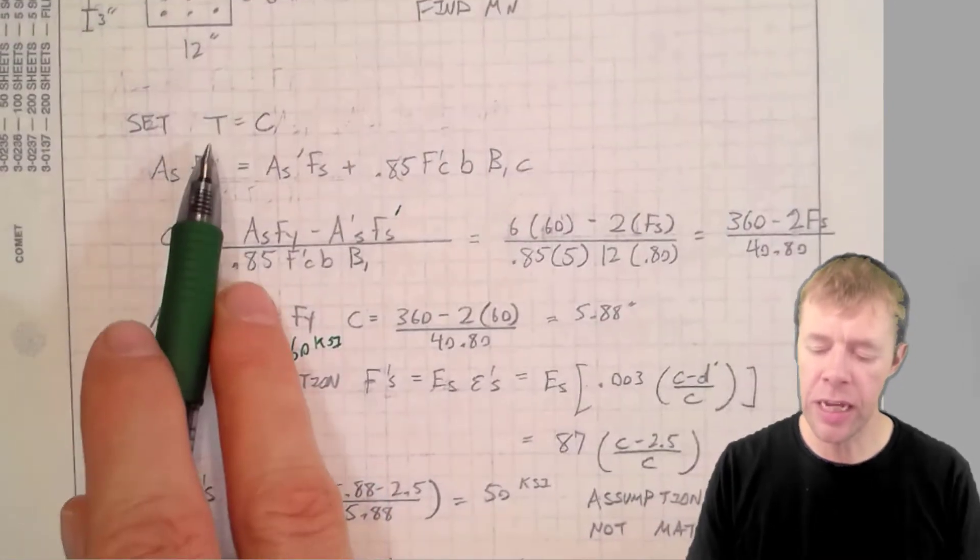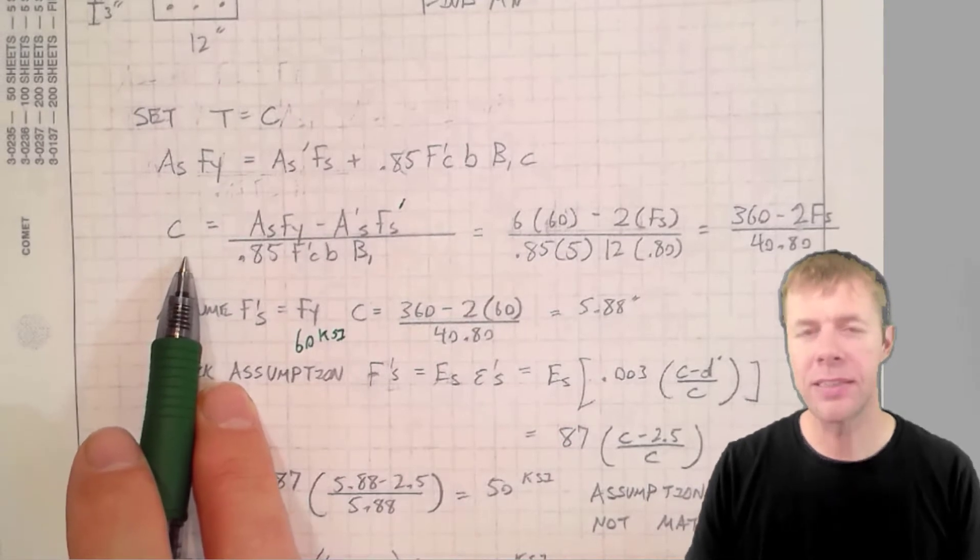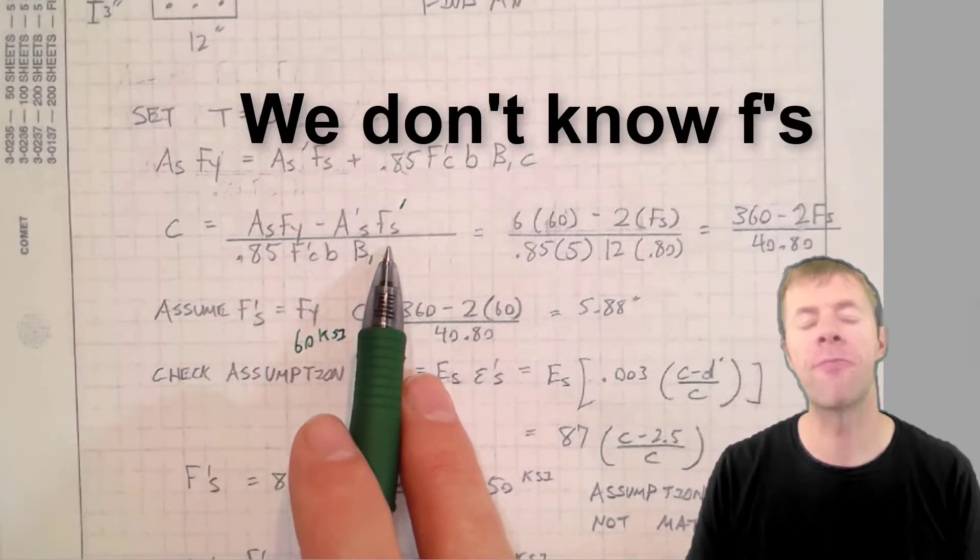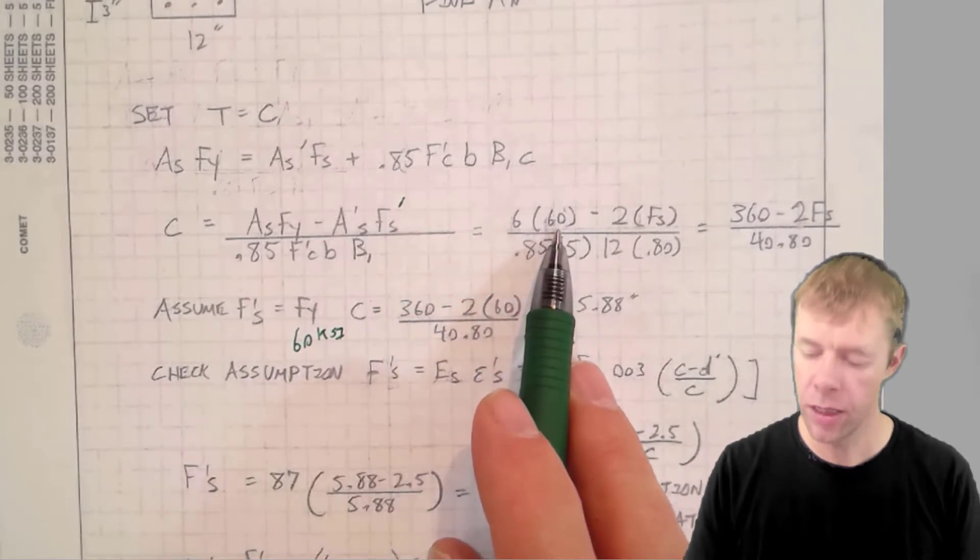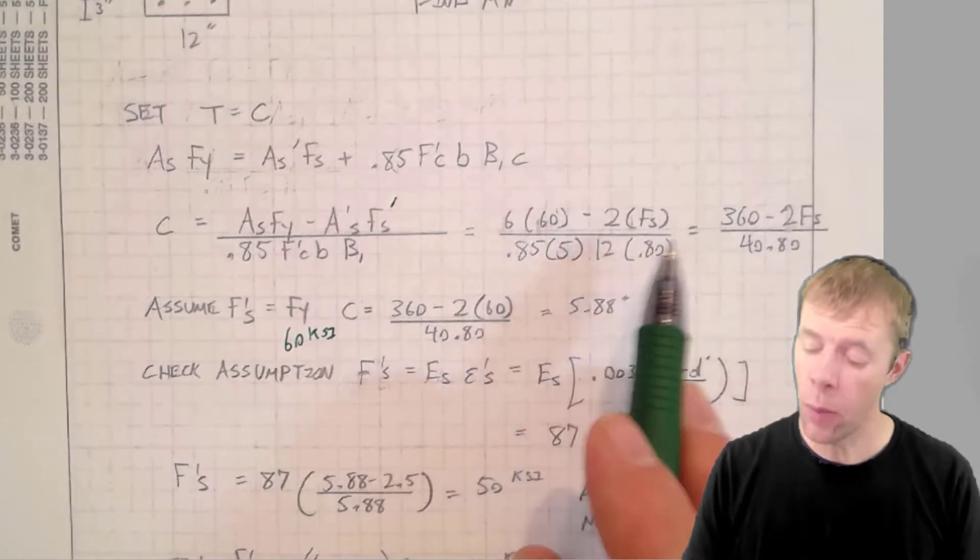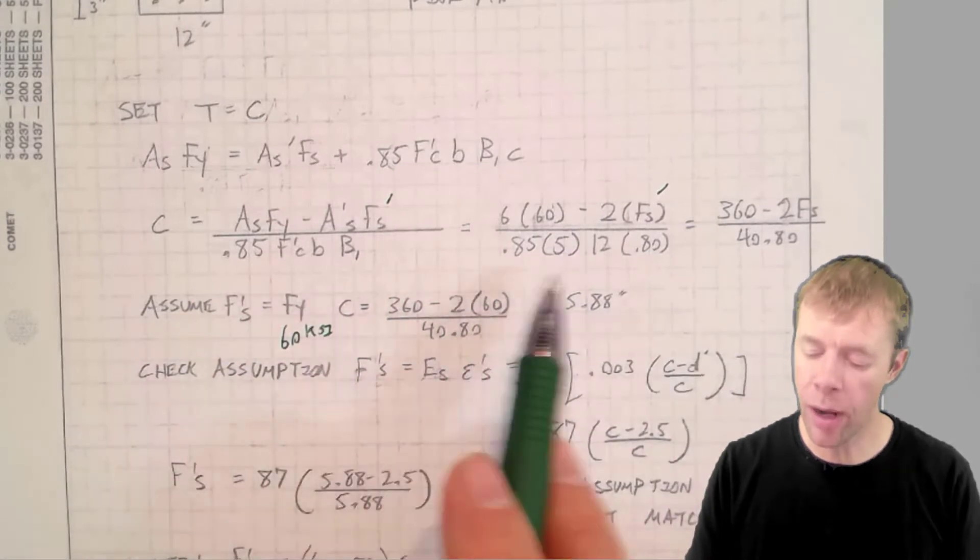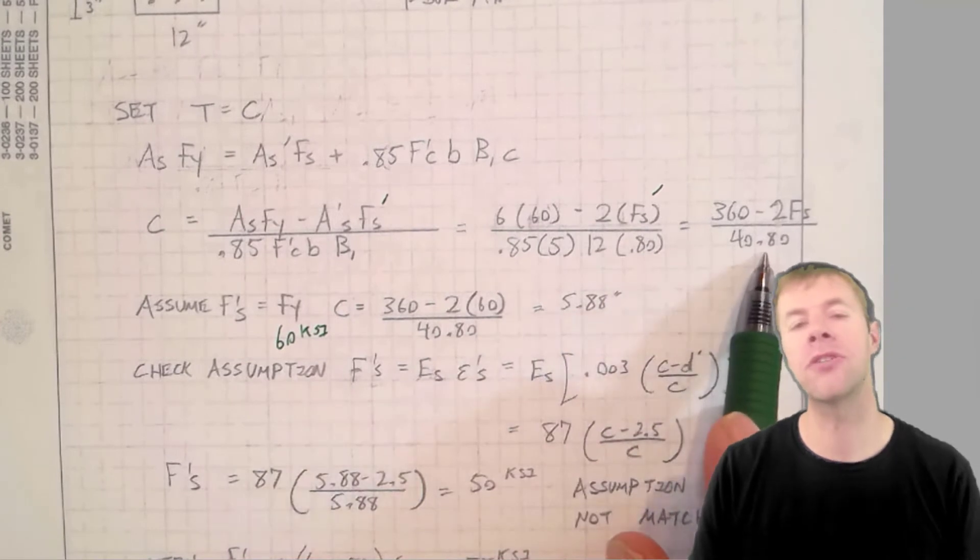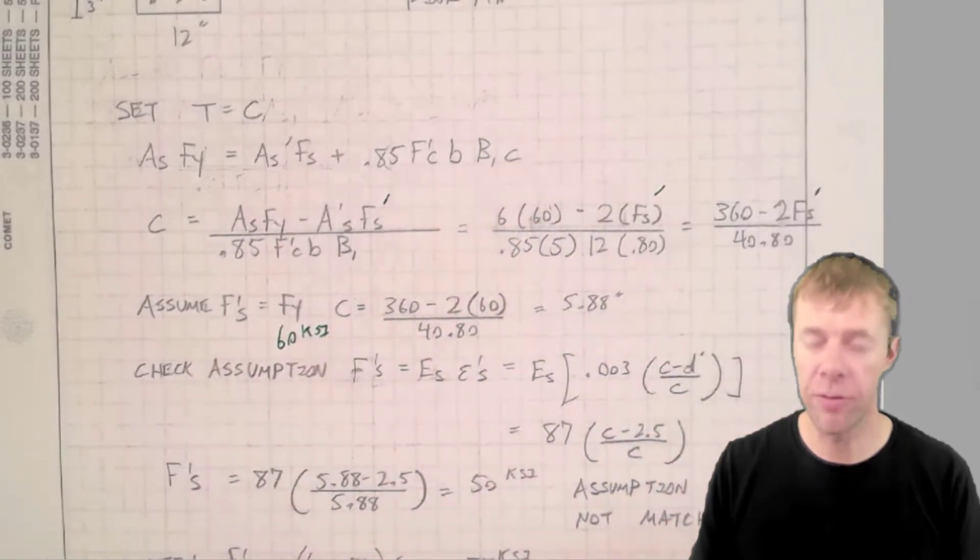The first step is to set the tension equal to the compression. We get this equation and simplify this to just this C. This C is very important. We actually know everything in this C, but we don't know F prime S. We know the area of steel, we know our FY, we know the AS prime, that's the area of compression steel. We do not know F prime S. We know 0.85, we know F prime C, B, and we know beta. This is a good idea to get to this as fast as you can. Solve this in terms of F prime S.